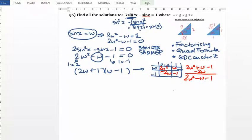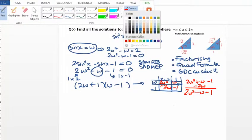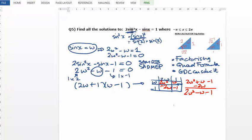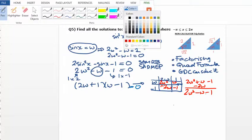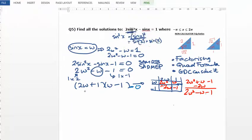The possible options here then are either 2w minus 1 equals 0. The only way this can equal 0, all of that, is either that's 0 or that's 0. So I'm going to go for 2w plus 1 equals 0 or this bracket's going to have to equal 0 because then anything times 0 is 0. In this case, w would equal 1.